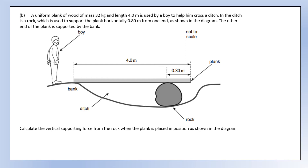A plank of wood of mass 32 kilograms and length 4 meters is used to help cross a ditch. A rock in the middle supports the plank, with dimensions shown. Calculate the support force from the rock. Since we don't know the support force from the bank, we take moments about the bank. The weight acts from the middle - 2 meters from the bank - and the support force is 3.2 meters from the bank. Rearranging gives us the force - fairly straightforward.